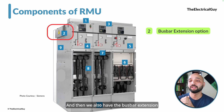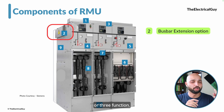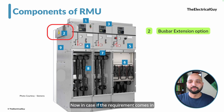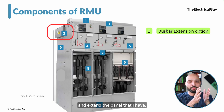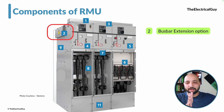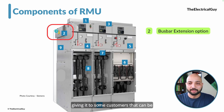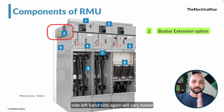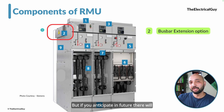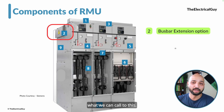We also have the busbar extension option. Ring main units are not necessarily single-function, two-function, or three-function — they can have more. If the requirement comes in the future to add more functions, more switches, or more circuit breakers, you can use the busbar extension option. You can remove the cover, place another panel, connect the two busbars, and extend the panel. Or if you want to connect measuring or metering devices — tariff metering for customers — that can be connected via this extensibility option, on either the right or left side depending on the design. This extensible type of RMU is beneficial if you anticipate future extensions.